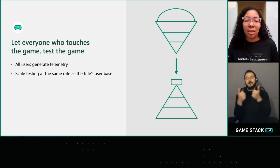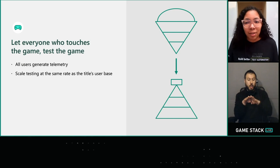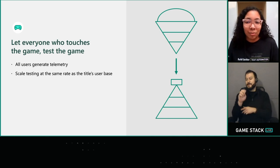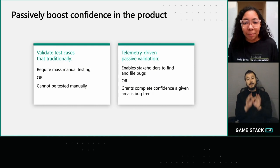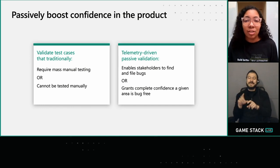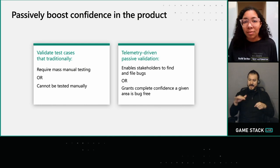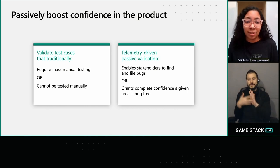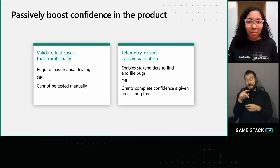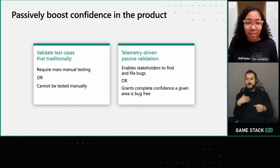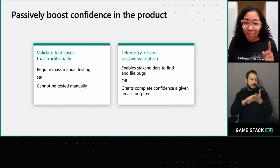It also allows you to scale your test force in the same way that you would scale your title's user base — whether that's by running a closed beta or flight, or post-release unleashing an update on millions of Game Pass users, there's no need to waste time onboarding a bunch of testers. This approach is especially valuable for two classes of test case: cases that require extensive manual testing — human hours we don't have or wish we could use in other areas — and cases that we just can't test by hand, which typically require complete coverage of a test area or need to run far more often than our test teams can support. What we get out of passive tests is bugs, but since telemetry covers every single game session, we can also use passive validation to have complete confidence that areas of our game are working as intended — and that bit is pretty magical.